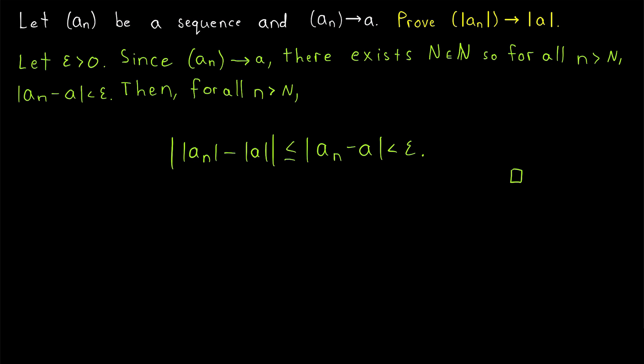Note that the converse is certainly not true. For example, consider the sequence negative 1 to the power of N. If we take the absolute value of that sequence, we'll have the sequence of absolute values of negative 1 to the N, which is just going to be a sequence of 1s.